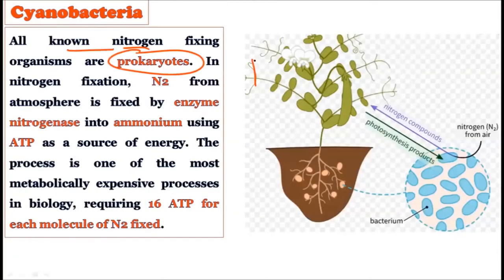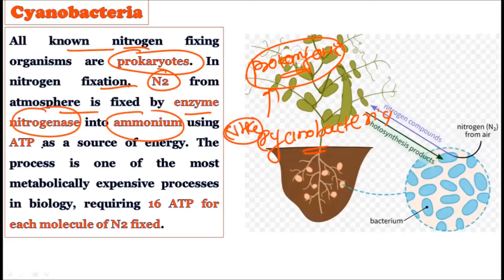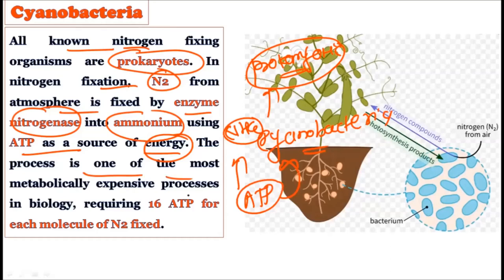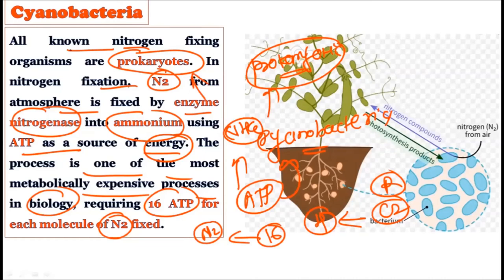All known nitrogen-fixing organisms are prokaryotic, and cyanobacteria are no exception. In nitrogen fixation, N2 from the atmosphere is fixed by the enzyme nitrogenase into ammonium ions, using ATP as energy source. This is one of the most metabolically expensive processes in biology, requiring 16 ATP molecules to fix one molecule of N2. Cyanobacteria are also diazotrophs — meaning they have the ability to fix nitrogen.